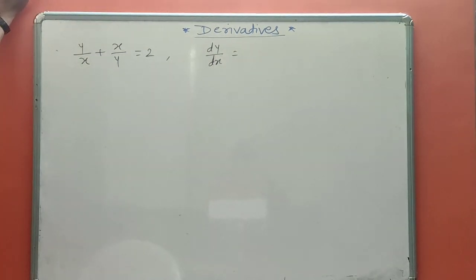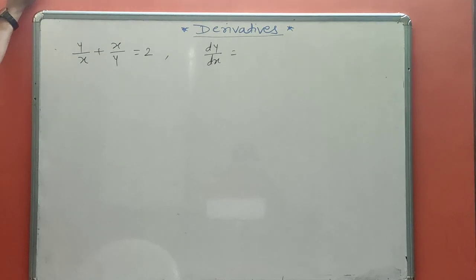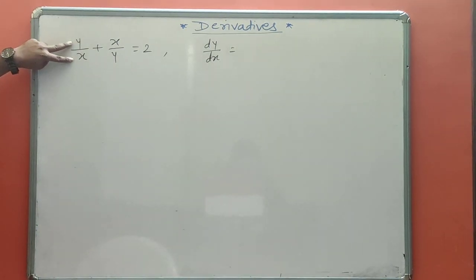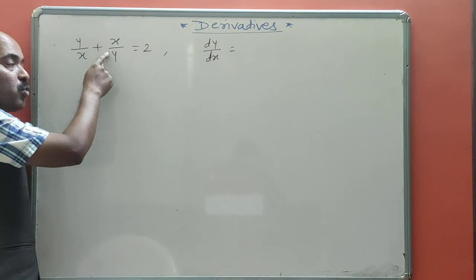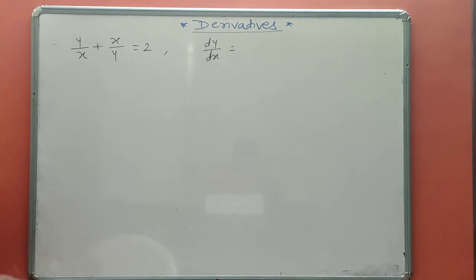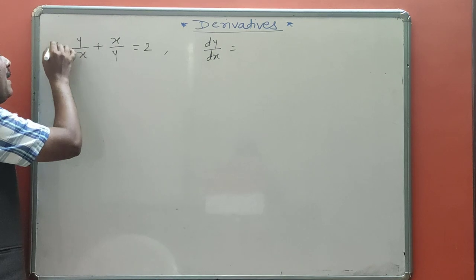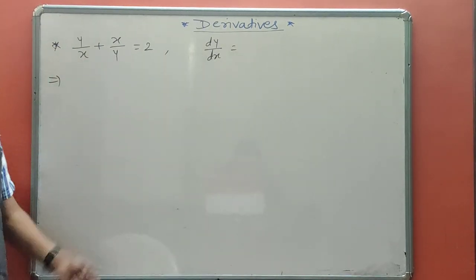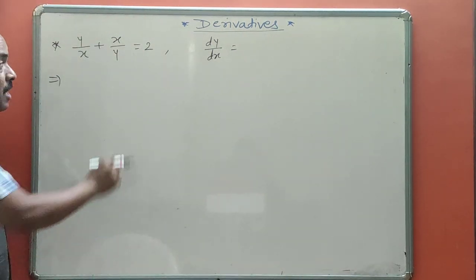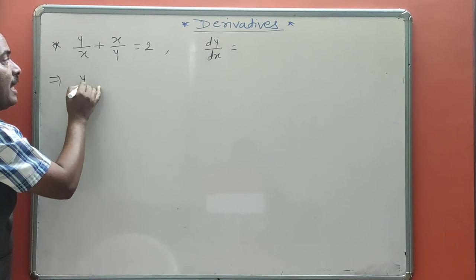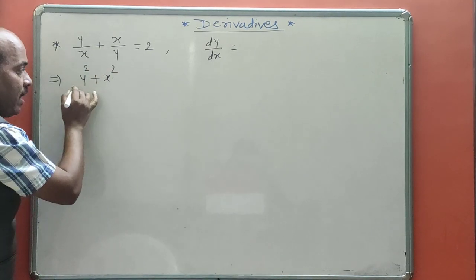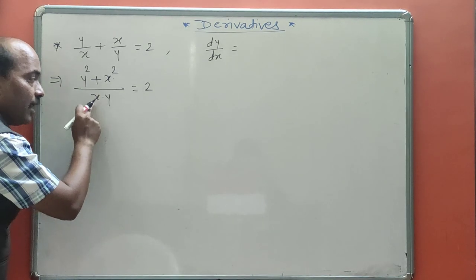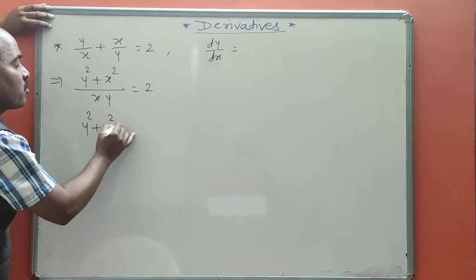Next example: y/x + x/y = 2. Find dy/dx. Here y is available in a division form. Differentiating directly would require the u/v rule twice. A better way is to first simplify. This is an addition of two fractions, so apply cross multiplication: (y² + x²) / (xy) = 2. Transfer the denominator to RHS: y² + x² = 2xy. This is the simplified statement.